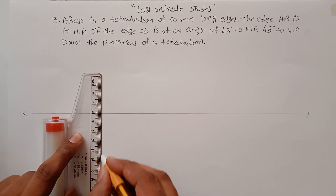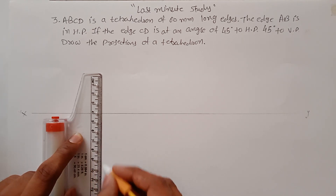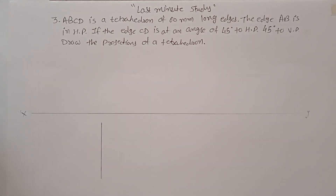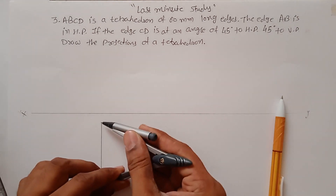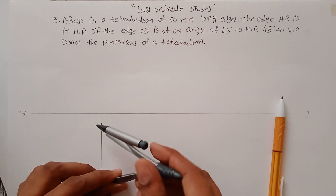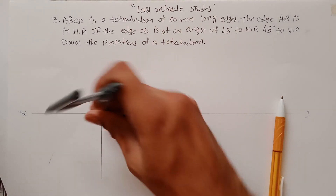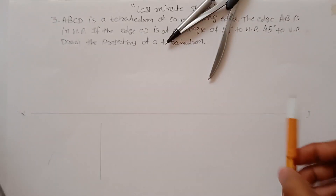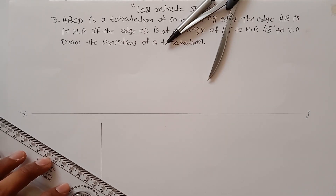First draw a line of 60mm, then draw an equilateral triangle like this — find the intersecting point and draw the equilateral triangle of side 60mm.